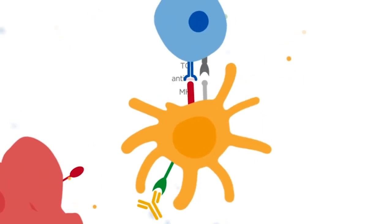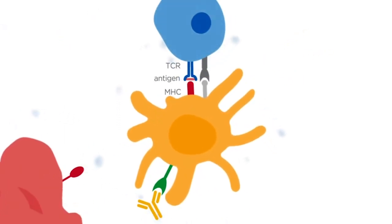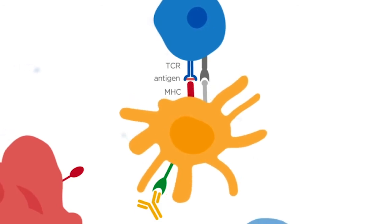Blocking SIRPα function on dendritic cells enhances their antigen presentation and T-cell stimulatory function.